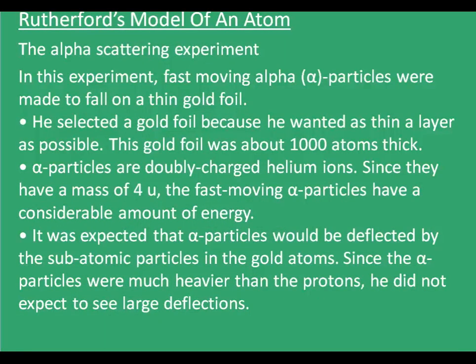Now let's move on to Rutherford's model of an atom. Rutherford did some experiments and came out with his own model of an atom. His experiment was the alpha scattering experiment. In this experiment, fast-moving alpha particles — that is, positively charged helium ions, He²⁺ — were made to fall on a thin gold foil. He selected a gold foil because he wanted a layer as thin as possible. This gold foil was about 1000 atoms thick.